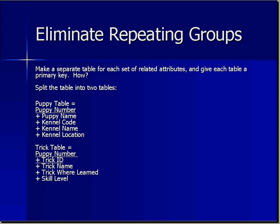Step one: eliminate repeating groups. You want to make a separate table for each set of related attributes and give each table a primary key. We take our big grid and break it down into a puppy table and a trick table, because the tricks are repeated every time the puppy is repeated. So we've got the puppy's name, the kennel code, the kennel name, and the kennel location together with a unique identifier — a primary key called puppy number. For the trick table, we break out the trick name, where the trick was learned, and its skill level, giving it a trick ID, and reference it back to the puppy table by including the puppy number.